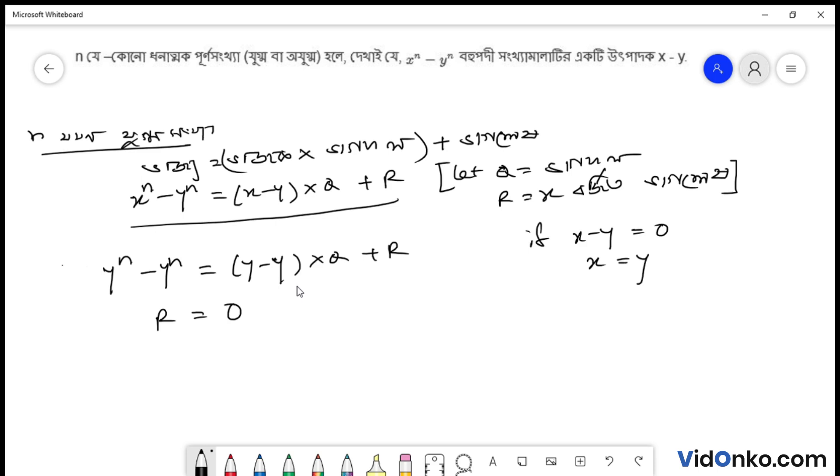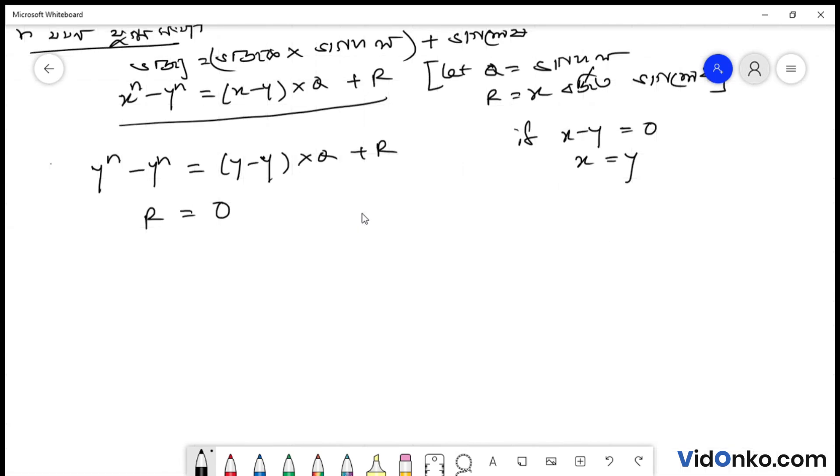Then the quotient is equal to x minus y, and the answer is x to the power n minus y to the power n equals x minus y times x to the power n minus 1 plus x to the power n minus 2 y.